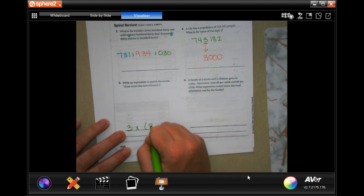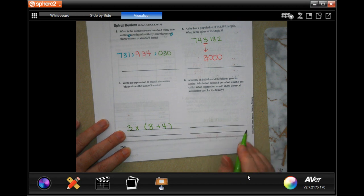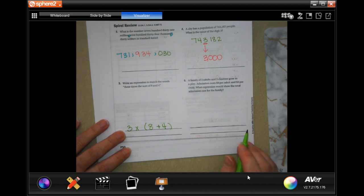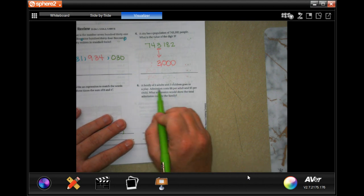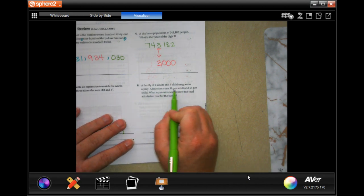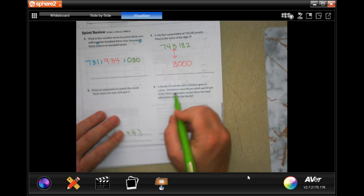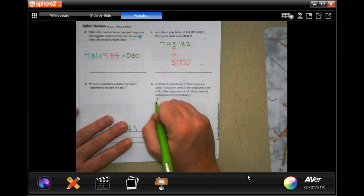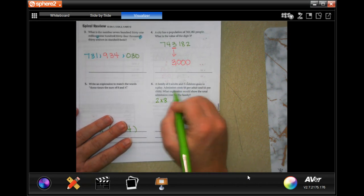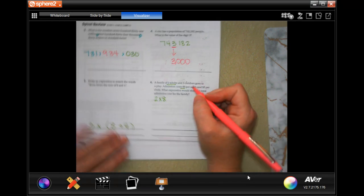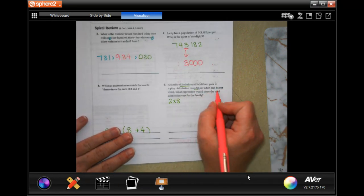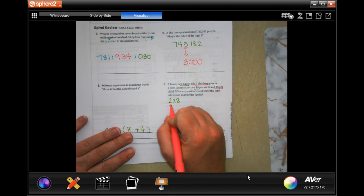A family of two adults and three children goes to a play. Admission costs eight dollars per adult and five dollars per child. So that's two times the eight, so two adults eight dollars. Three children five dollars each.